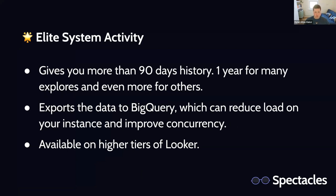I alluded to Elite System Activity earlier. This is a version of the system activity that gives you more than 90 days — for most things, it's a year. It exports the data to BigQuery for you, which has a couple of benefits: you get the full history, you can write your own SQL queries against it, and running against the system activity explorer can produce some slight load on your Looker instance. Offloading this to BigQuery reduces that load and makes all the load be on BigQuery, which is totally separate from Looker. This is really useful if you're a particularly large organization with things on an annual cycle where 90 days isn't sufficient.